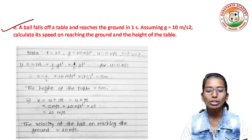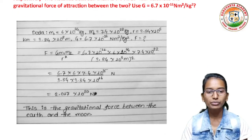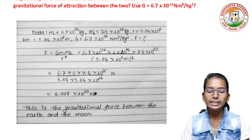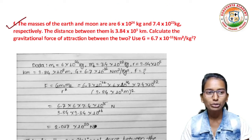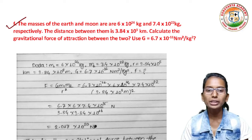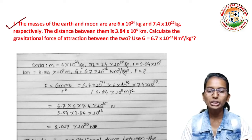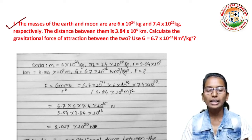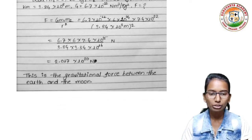The masses of the earth and the moon are 6×10²⁴ kg and 7.4×10²² kg respectively. The distance between them is 3.84×10⁵ km. Calculate the gravitational force of attraction between them given G = 6.7×10⁻¹¹ N·m²/kg². The gravitational force between the earth and the moon is 2.017×10²⁰ Newton.